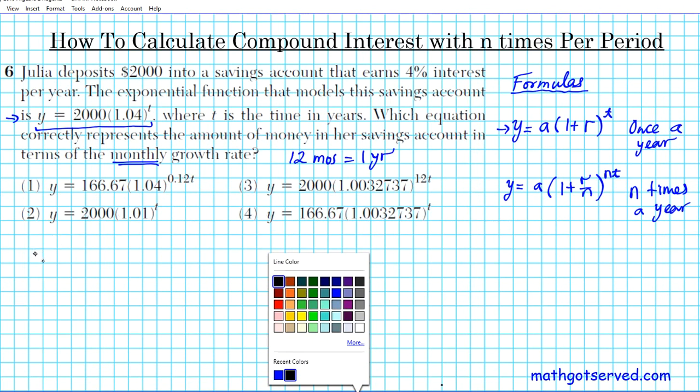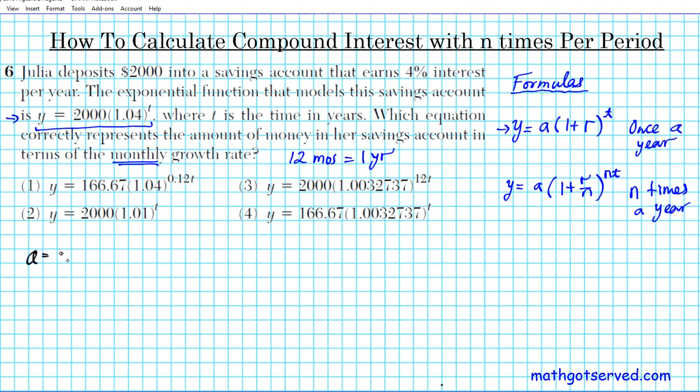In this particular scenario, the original function, this one that's given right here, you can easily see that this formula is what is used to generate it. So let me show it to you real quick. So a is initial amount, which is 2000. The growth rate r is 4%, so we have to change that into decimal, which is 0.04.